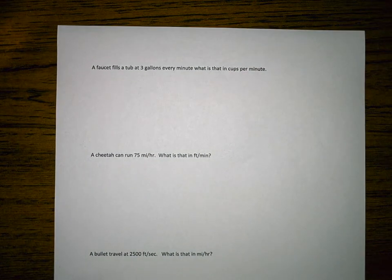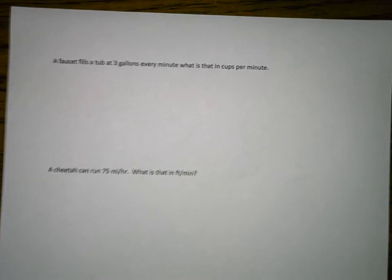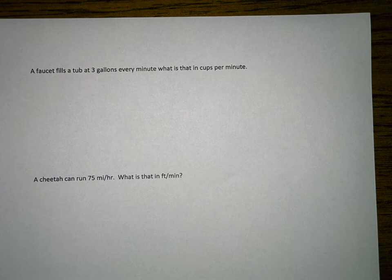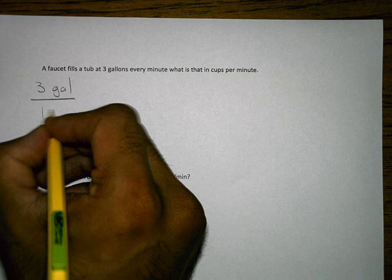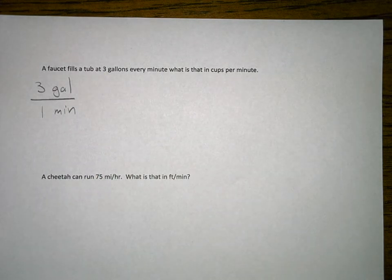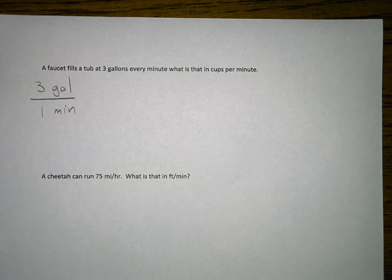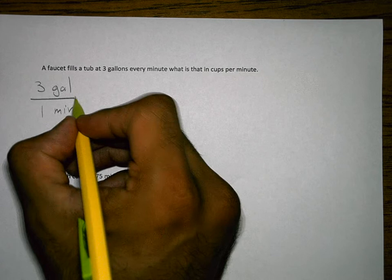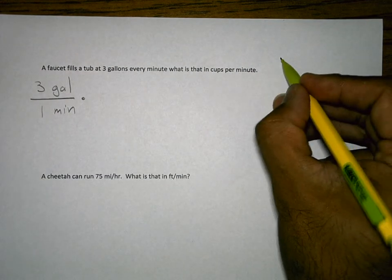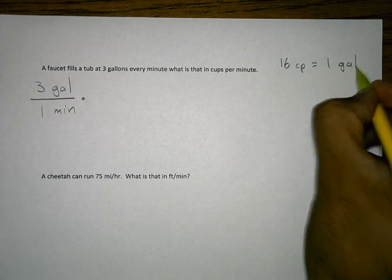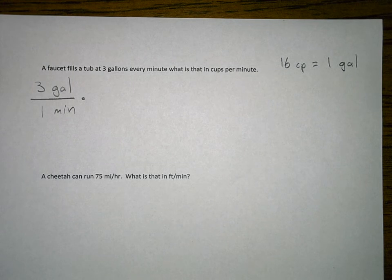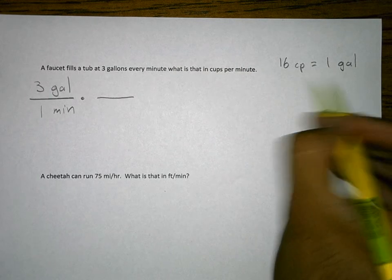First one here is a faucet fills a tub at 3 gallons every minute. What is that in cups per minute? So I'm going to go ahead and set myself a fraction up. So the first thing I'm going to say is 3 gallons over 1 minute. That's 3 gallons every minute. So now there are some things that I need to know. I need to know how many cups are in stuff, how many feet are in yards, things like that. So for this particular one, 16 cups equals 1 gallon. So I need to know that. Well, so I'm going to set up a unit rate and I'm going to put this in a fraction. I'm going to put that into a fraction.